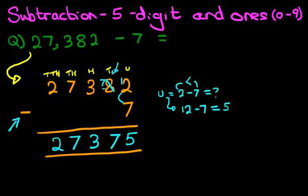And we have our answer. 27,382 minus 7 is 27,375. That is correct. Let's give it a nice big tick. So that is how we do subtraction of five-digit numbers and ones using the vertical format.